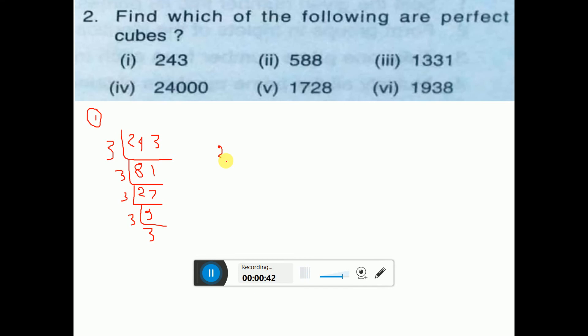So 243 is equal to, how many 3's? See, five 3's are there: 1, 2, 3, 4, 5. Five 3's we got. So cube root, if we give here, here also we have to give cube root.